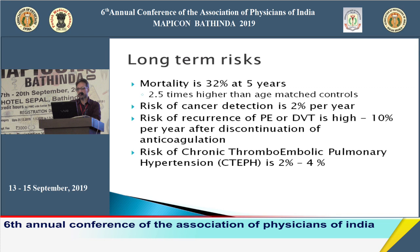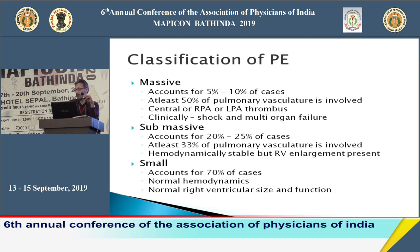Chronic thromboembolic pulmonary hypertension occurs in two to four percent of patients. Regarding classification: massive pulmonary embolism accounts for five to ten percent of cases — defined when more than 50 percent of pulmonary vasculature is involved on CT, with central saddle-like thrombosis or thrombus in either main pulmonary artery. These patients present with refractory shock and multi-organ failure, with early mortality greater than 30 percent.